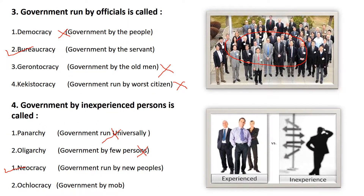Next: government by officials. It means a government which is run by servants or workers. When servants or workers are in the government, that government is called bureaucracy — not democracy. Bureaucracy means government by servants, and that is the right answer.